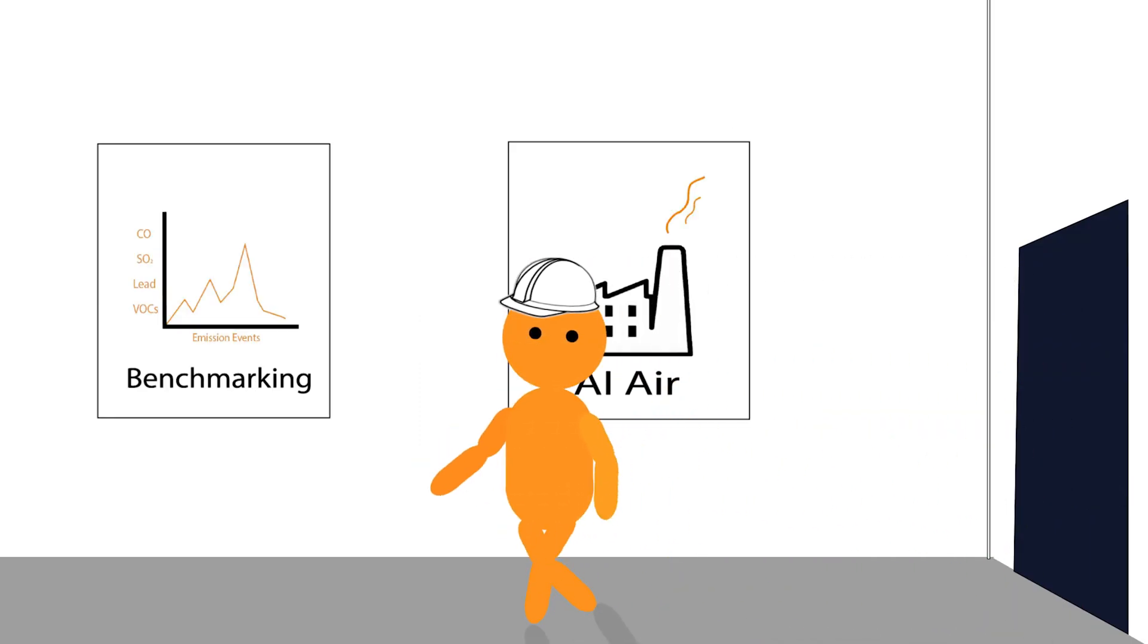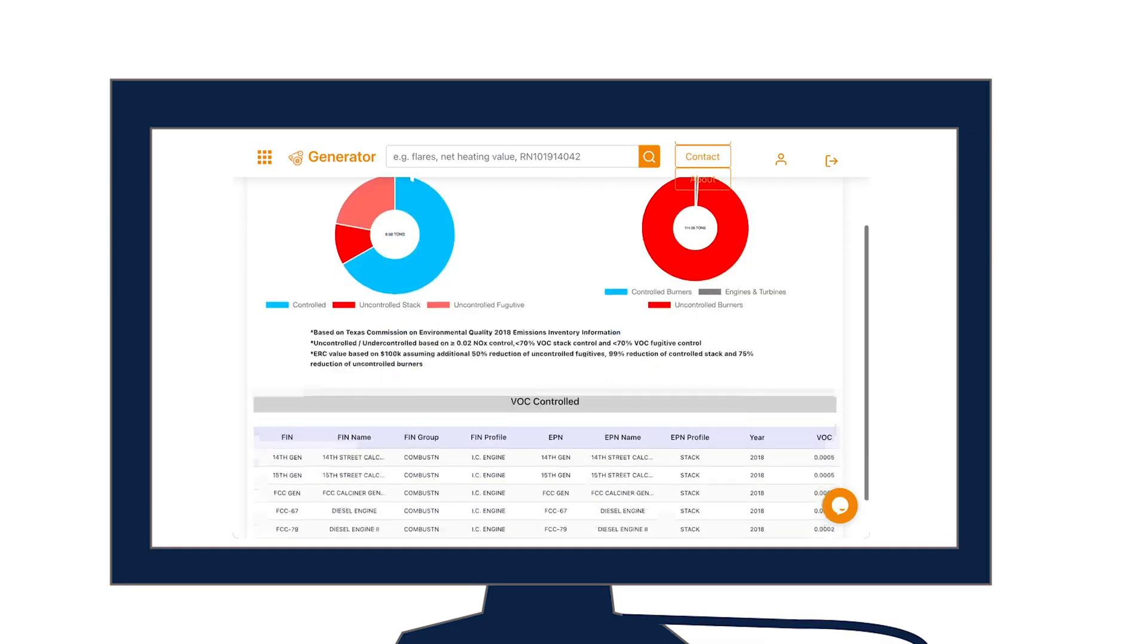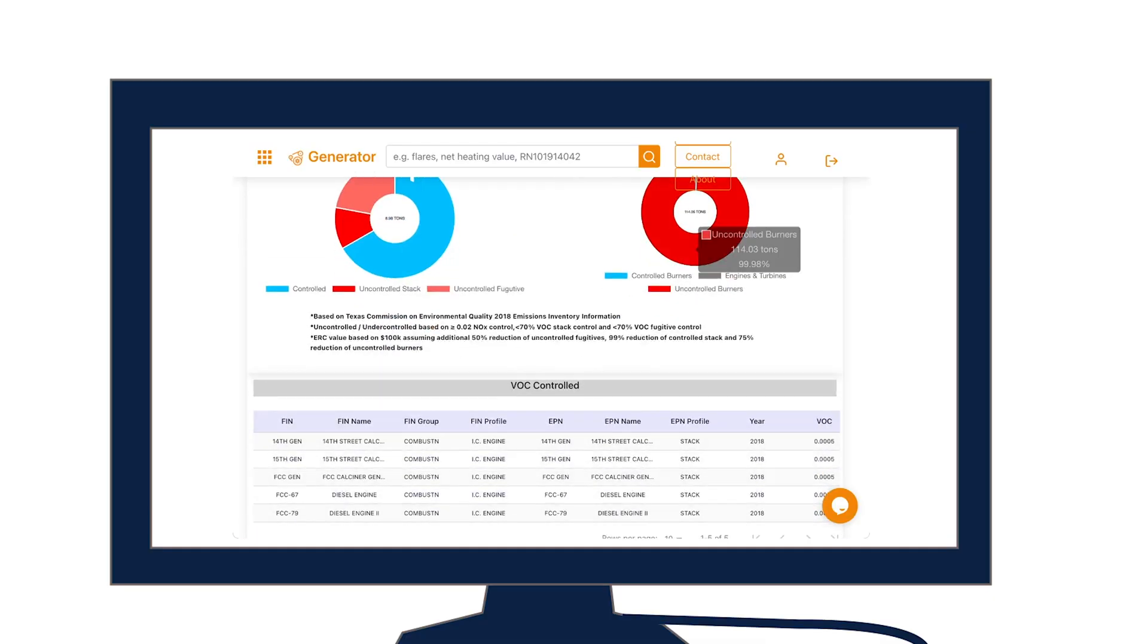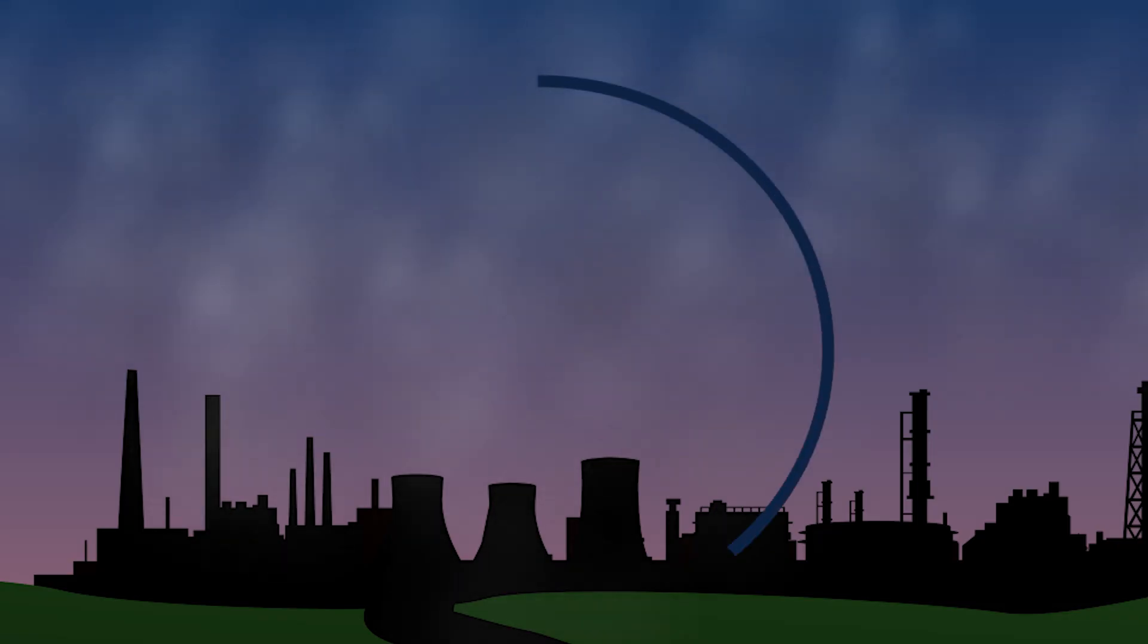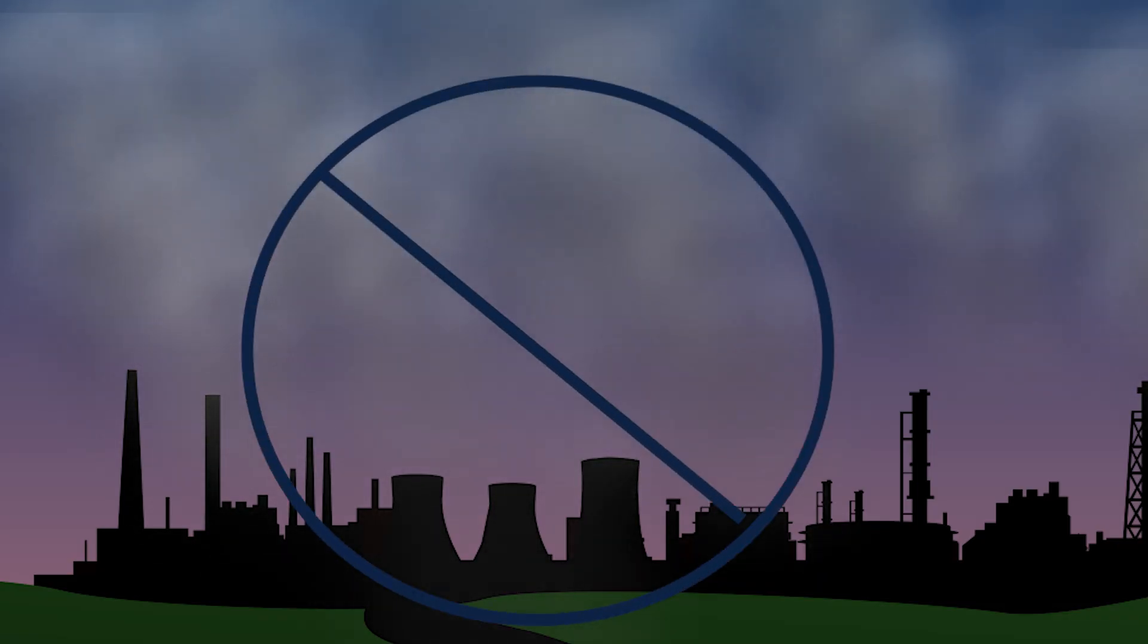our products such as AI Air or benchmarking can be great ways to become more informed about VOC emissions. In addition, the generator can provide industry with potential emission reduction credit opportunities from simply cutting down on VOC emissions.